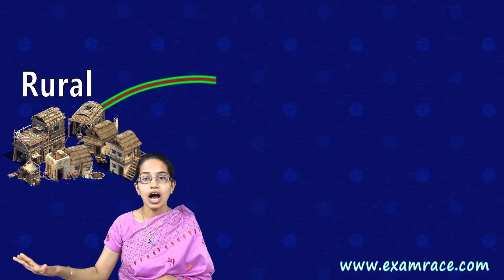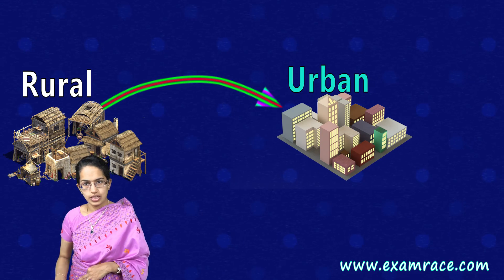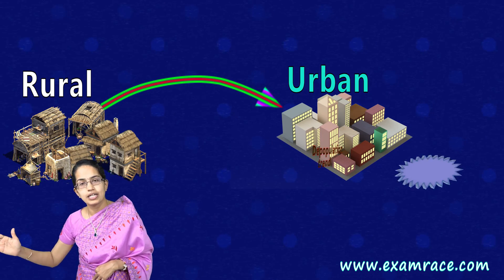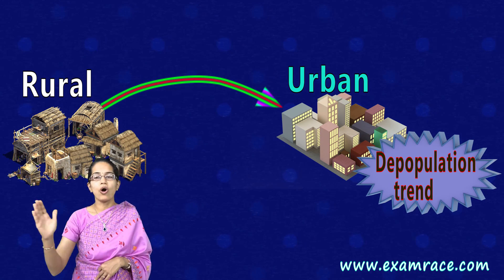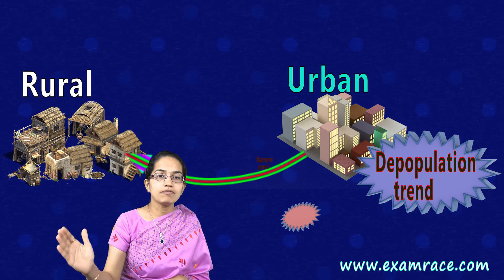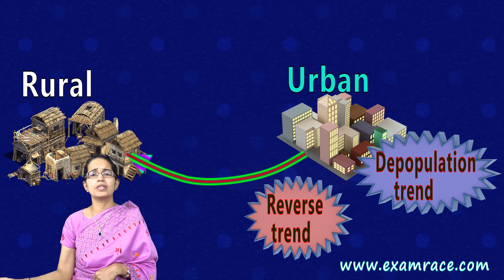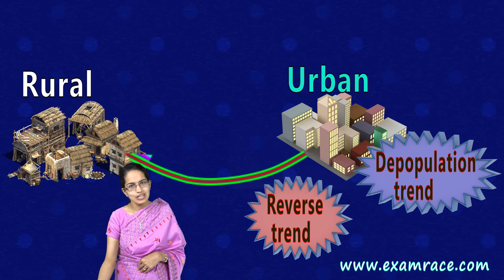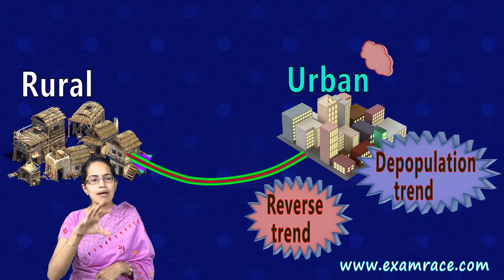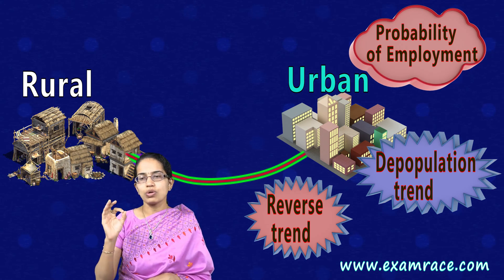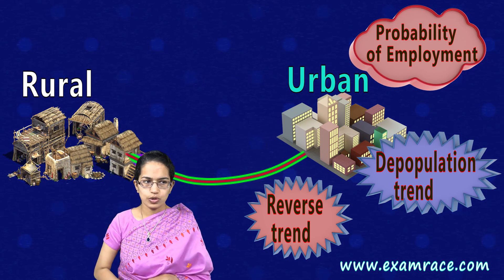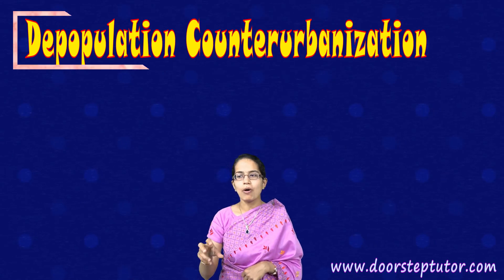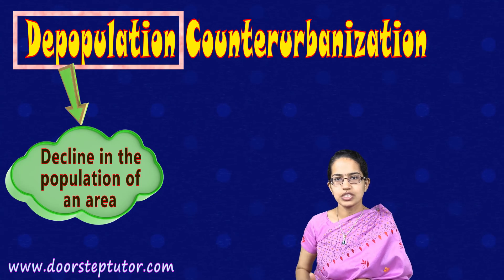What Todaro tried to explain was that it is only because of the earning differential and an expected earning wage that people try to move from a rural area to an urban area. But as soon as that earning differential stops, there would be a reverse trend and people would start moving back from urban areas to rural areas. Probability of employment is one of the key aspects he focused on.